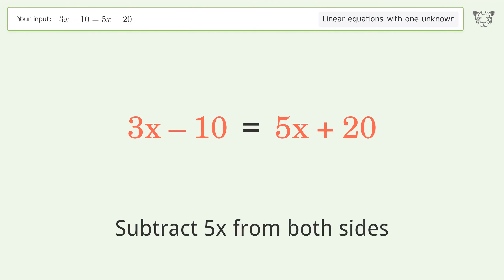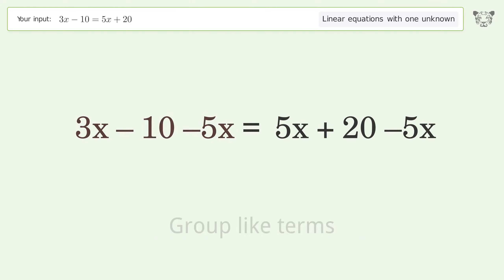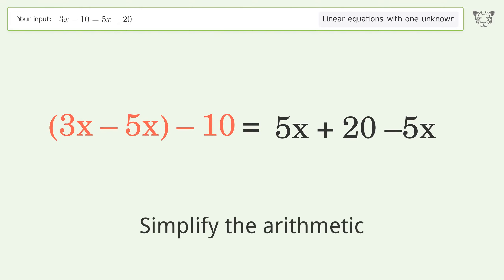Subtract 5x from both sides. Group like terms. Simplify the arithmetic.